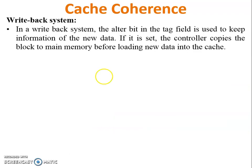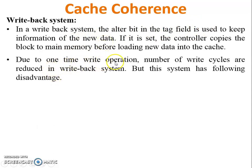The second strategy is the write-back system. In write-back, an altered bit in the tag field is used to keep information about new data. The controller copies the block to main memory before loading new data into the cache. When the tag field is changed, it means data of that block has been modified. Due to this one-time write operation, the number of write cycles is reduced, making write-back better than write-through.